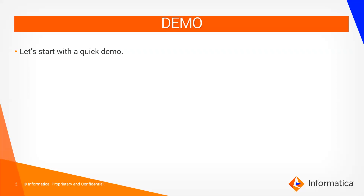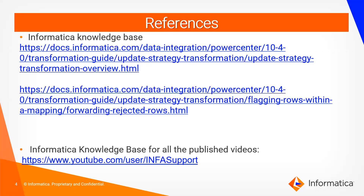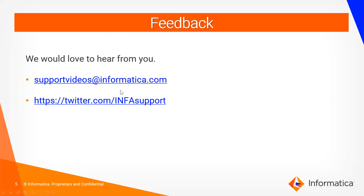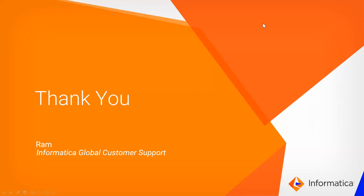Update Strategy is mainly used when working with a dynamic lookup — it is very helpful in that scenario. For references, you can see the Update Strategy guide which covers all the properties discussed, including Forward Rejected Rows. You can also visit our Info Support channel and give feedback at support.videos@informatica.com. Thank you for watching this video.